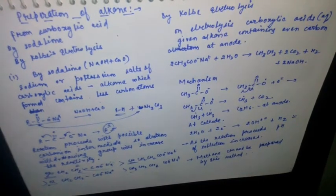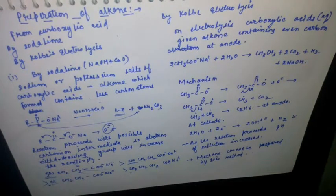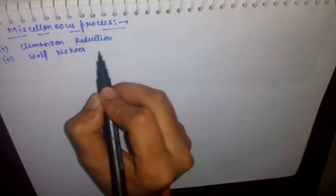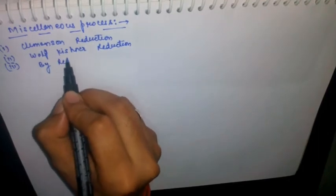Now we will talk about some miscellaneous processes to form alkanes. There are three processes: first, Clemmensen reduction; second, Wolff-Kishner reduction; and third, by red phosphorus and HI.